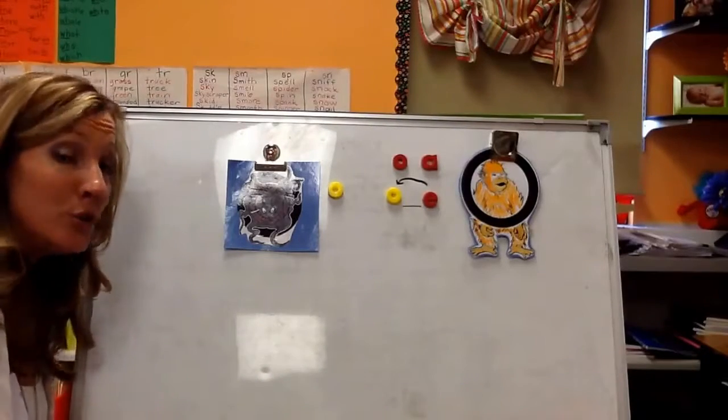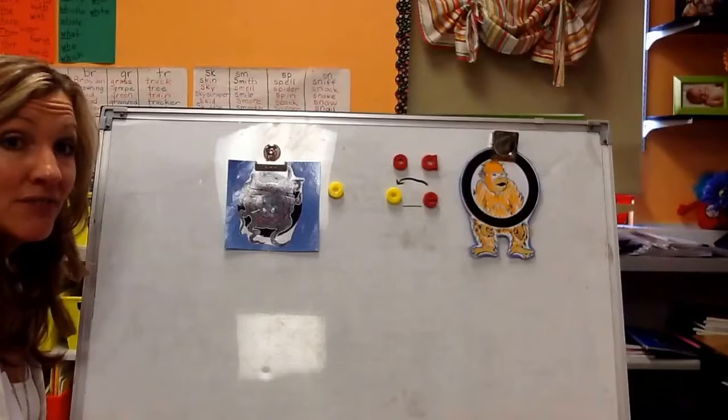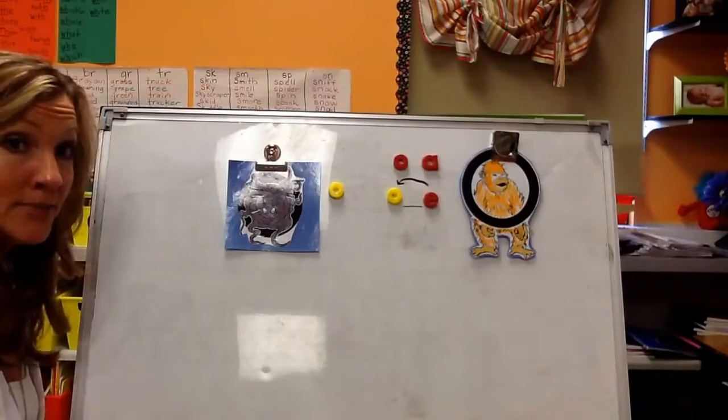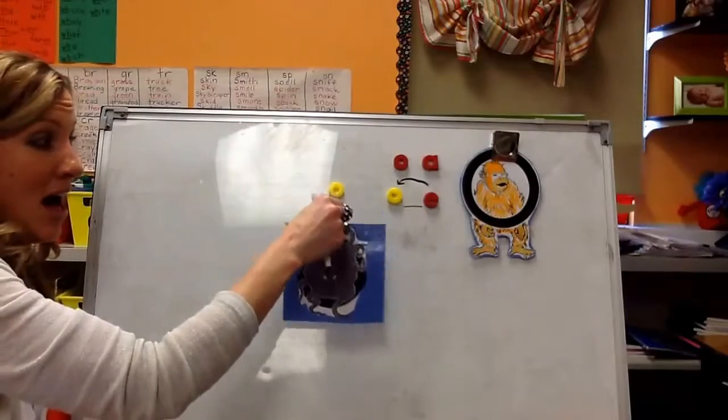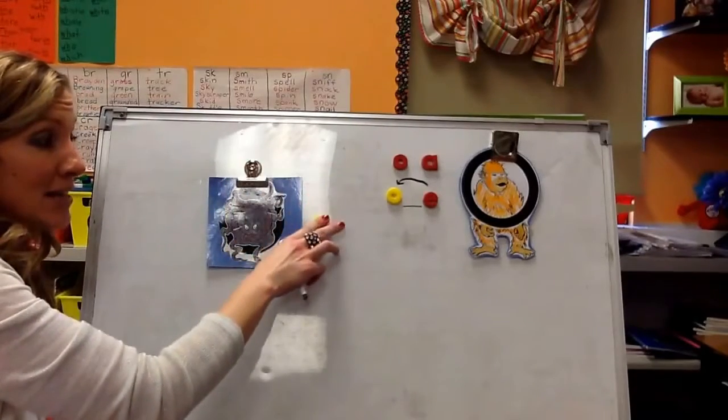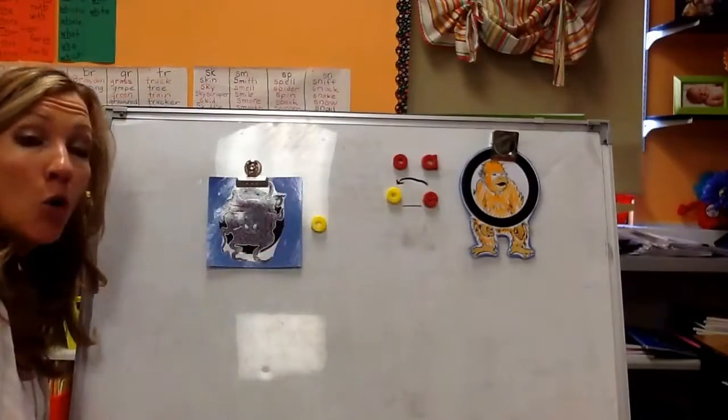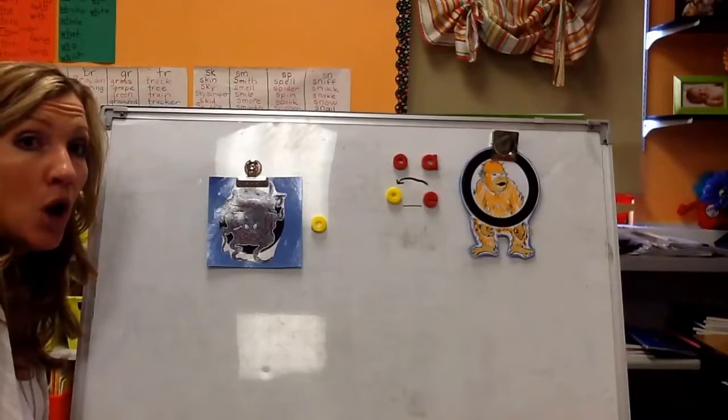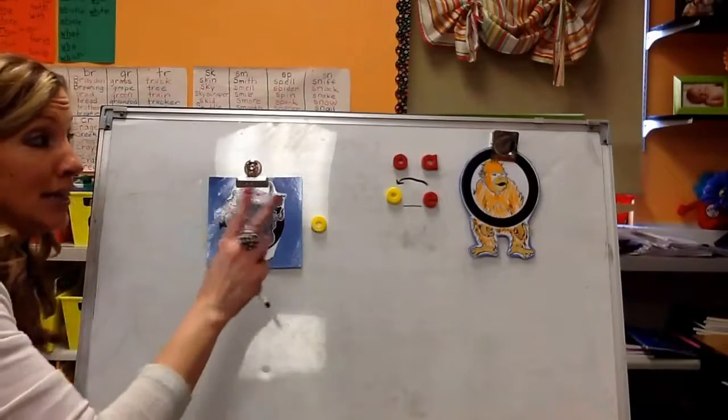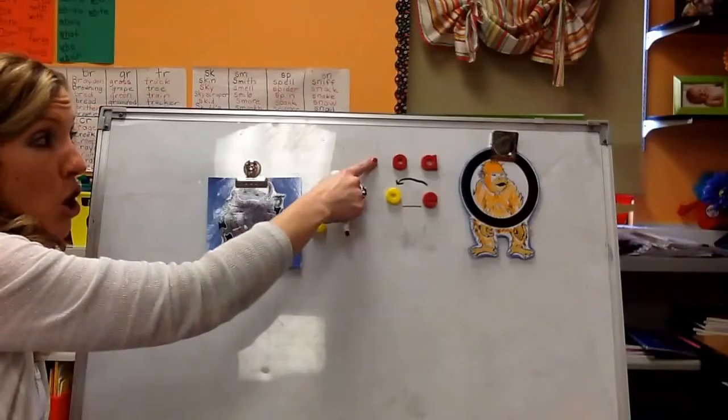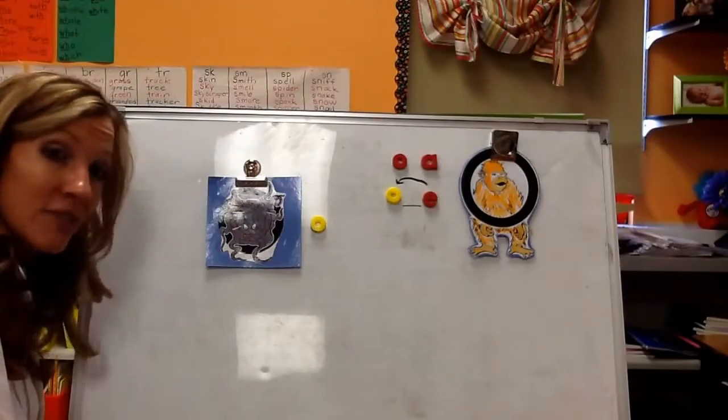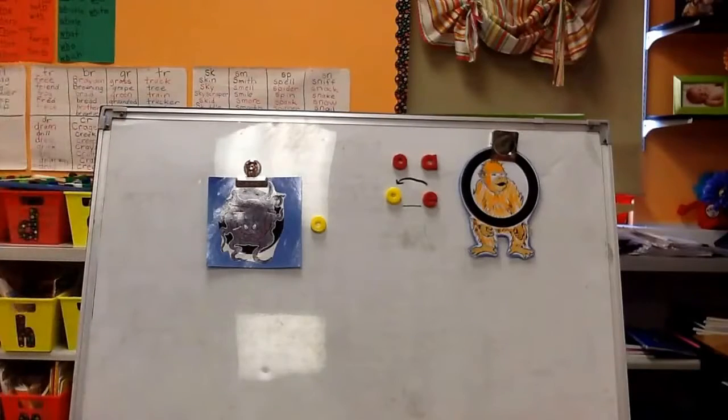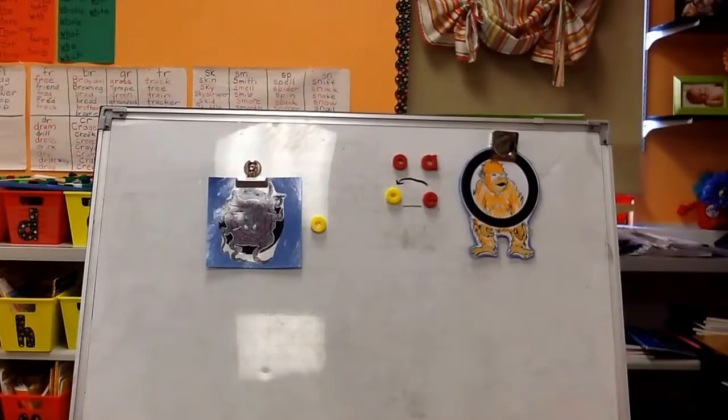So when you do your writing, I want you to ask yourself, does it look right? When you hear ollie octopus, that's going to be O by itself. When you hear opal orangutan, there are at least these two ways we'll learn about more, O-A or O consonant E. And I want you to write it and ask yourself, does it look right?